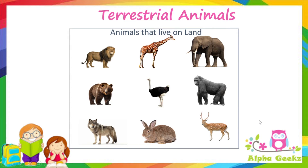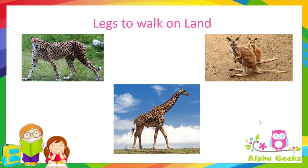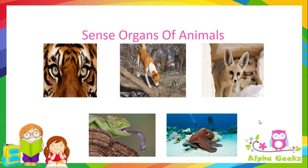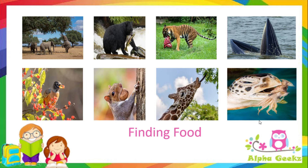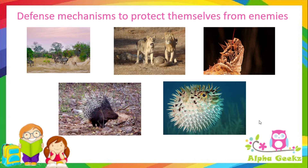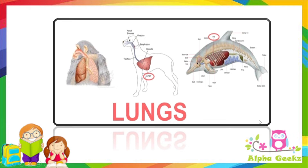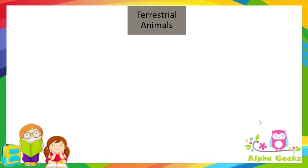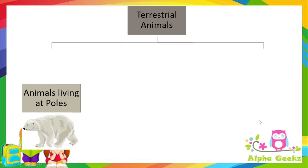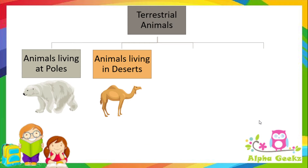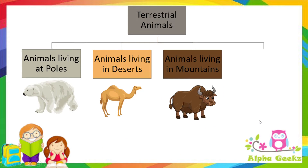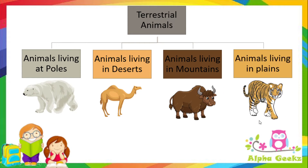Terrestrial animals are the animals that live on land. They have legs to walk on land and sense organs to feel changes around them. They also find food and escape from enemies, and most of them breathe through lungs. Terrestrial animals can be further grouped into animals living at poles, animals living in deserts, animals living in mountains, and animals living in plains.